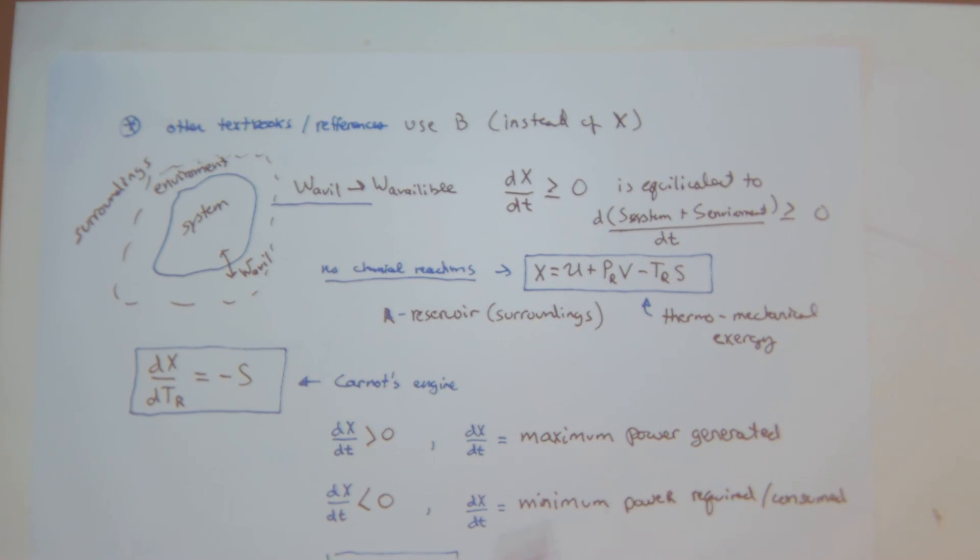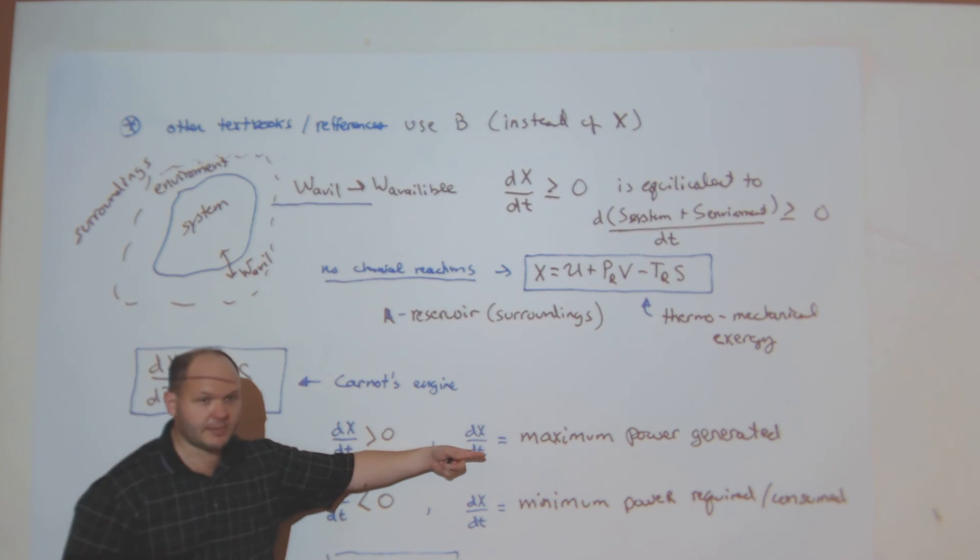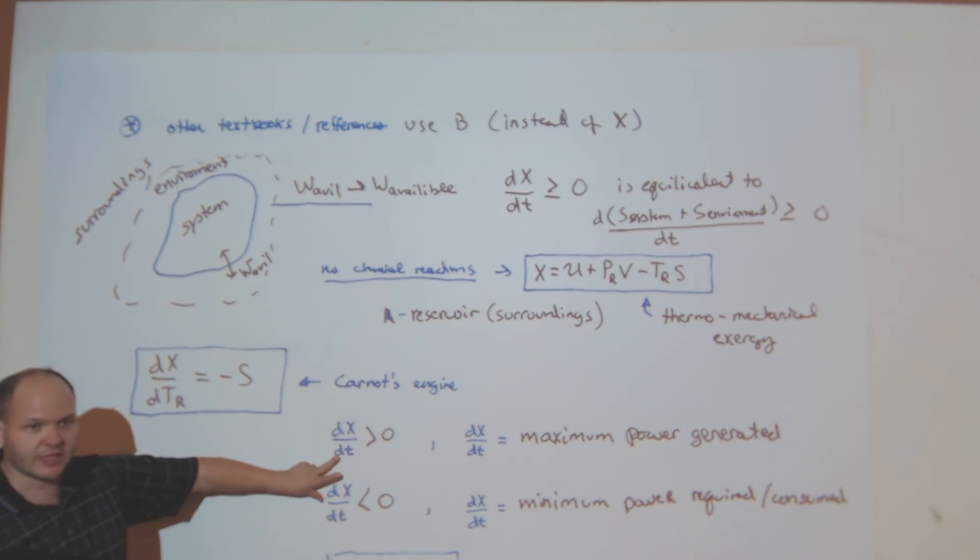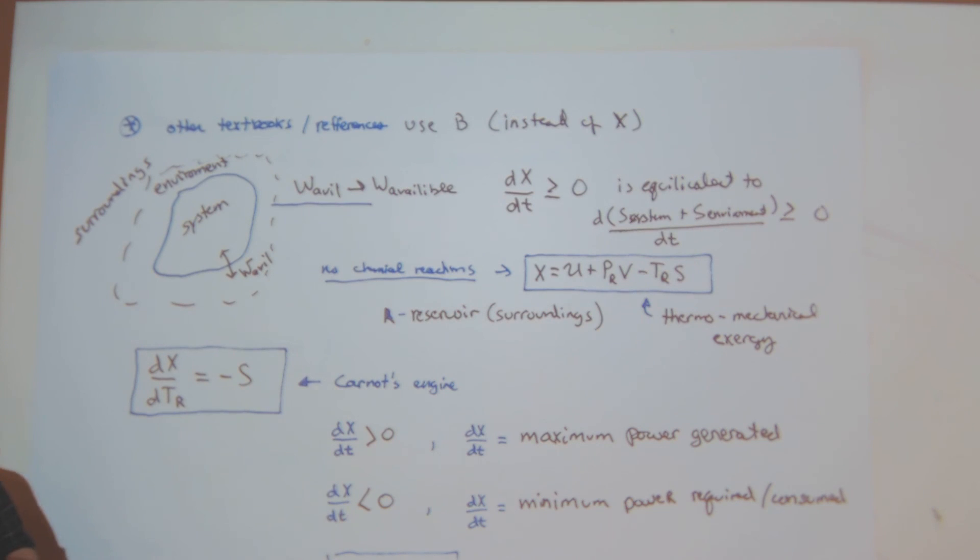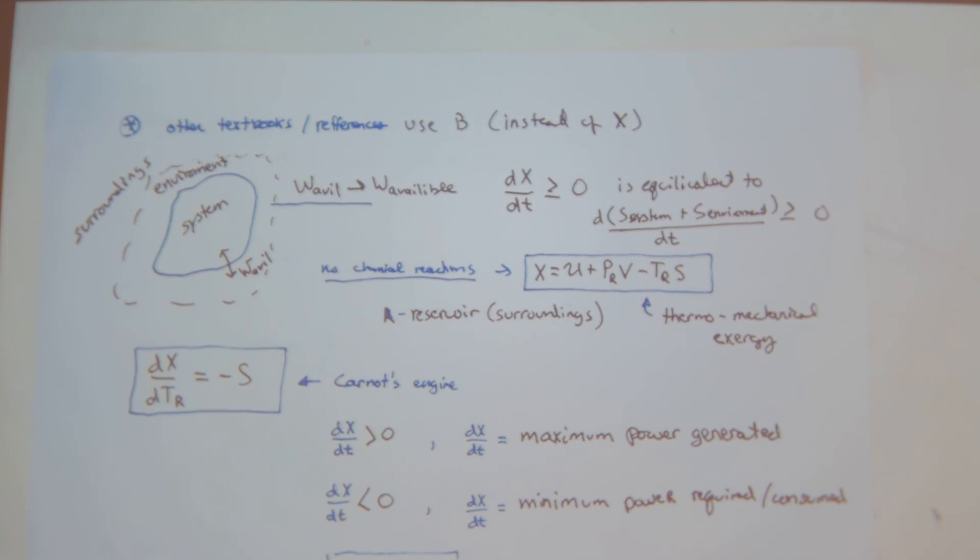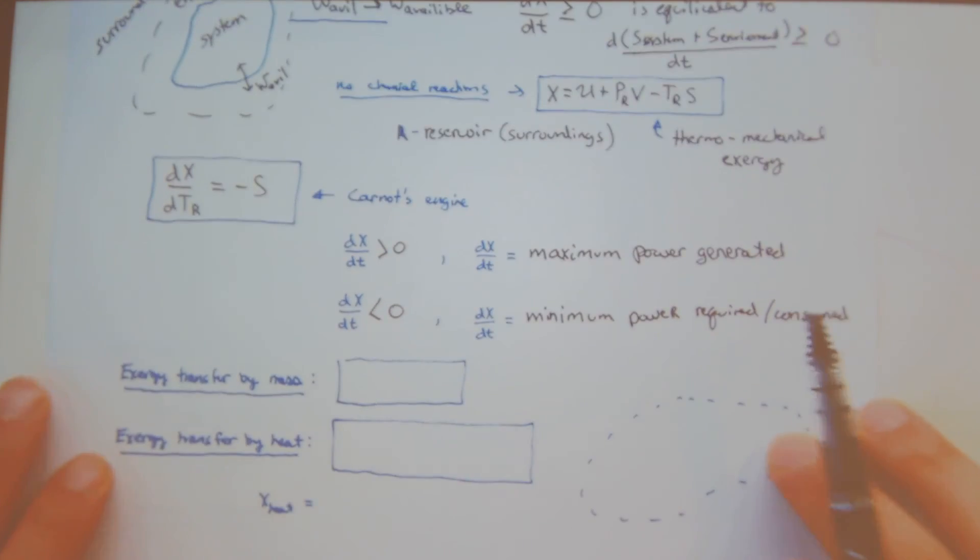And in this case, this is the minimum power required consumed. Okay, so for a power generation device, we had relationships for the work reversible and the work useful or work actual. Exergy is related to some way of giving us an idea of how to calculate or what are the bounds on the maximum amount of work we can expect, or the minimum amount of work or power we will need to consume something. So we'll pick up from here next lecture.